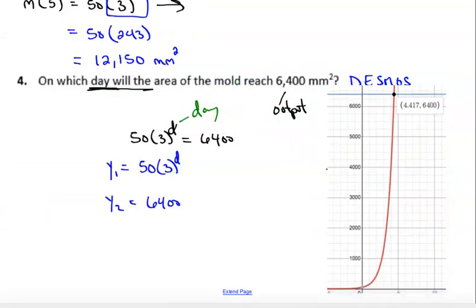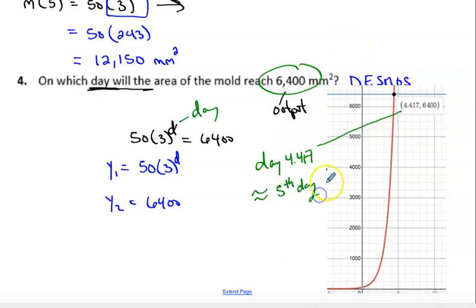So on which day will the area of the mold reach 6400? Well, on day 4.417. So we're going to have to increase that and say approximately the fifth day of doing the experiment and recording. All right. So that's an option to do it on Desmos. Again, we can do this on the calculator. If we did this on the calculator, you put these both into your calculator.